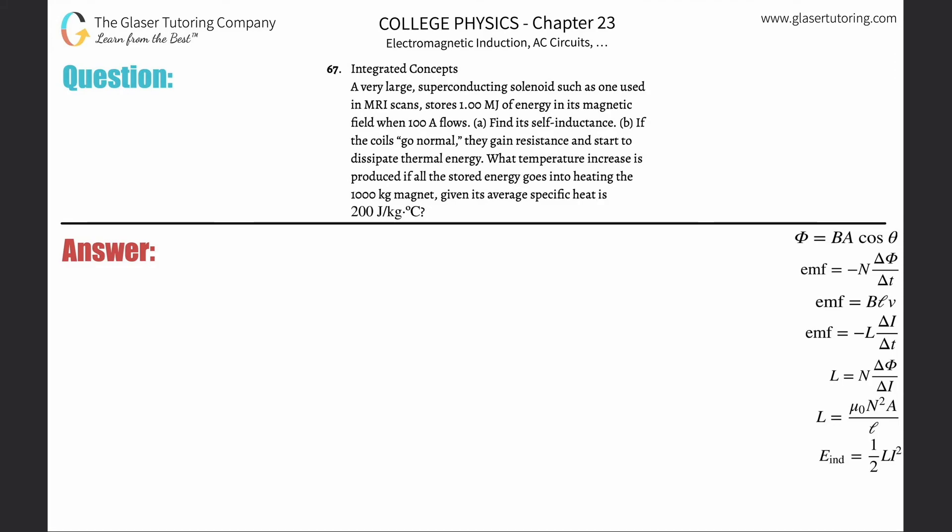Number 67, integrated concepts. A very large superconducting solenoid such as one used in an MRI scan stores one megajoule of energy in its magnetic field when 100 amps flow. Find its self-inductance. All right, so there's two formulas we use for self-inductance.